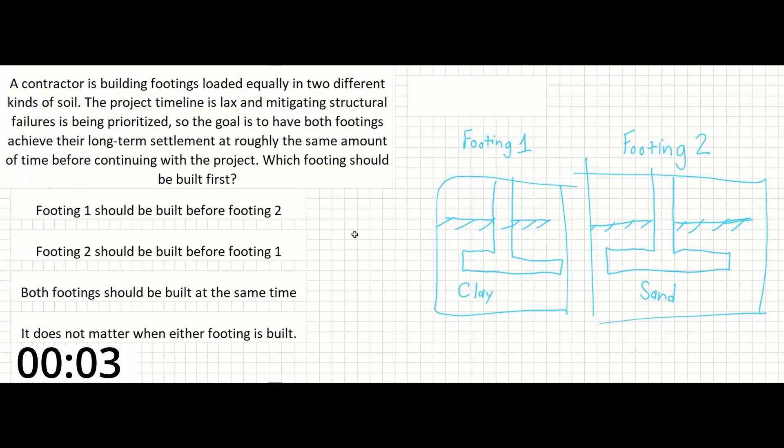Today we have another concept question. A contractor is building footings loaded equally in two different kinds of soil. The project's timeline is lax, and mitigating structural failures is being prioritized. So the goal is to have both footings achieve their long-term settlement at roughly the same amount of time before continuing with the project. Which footing should be built first?